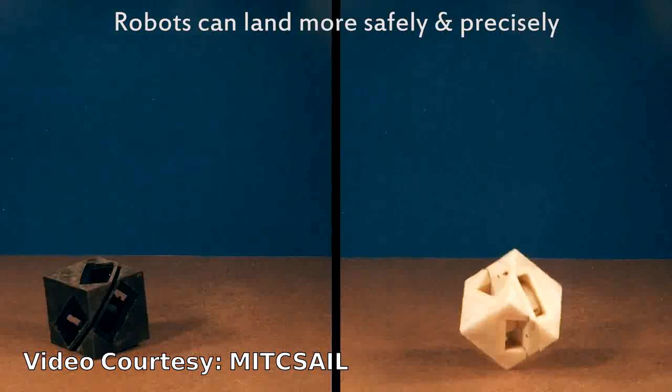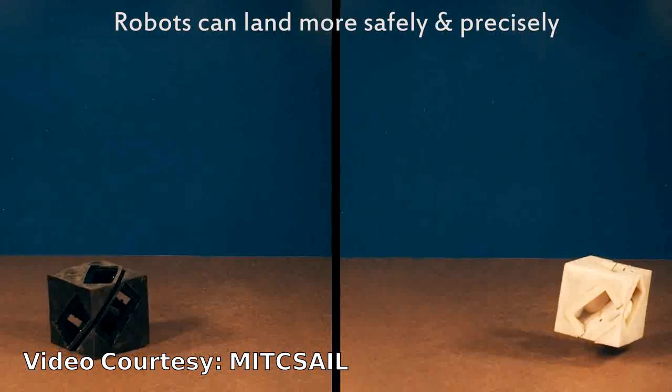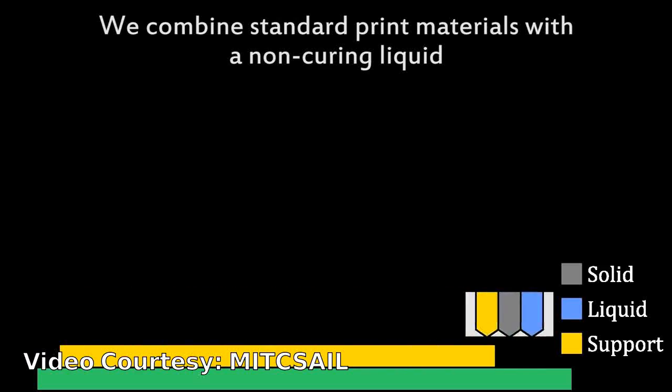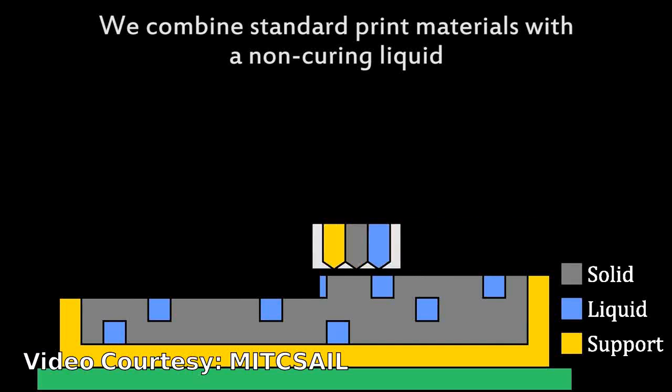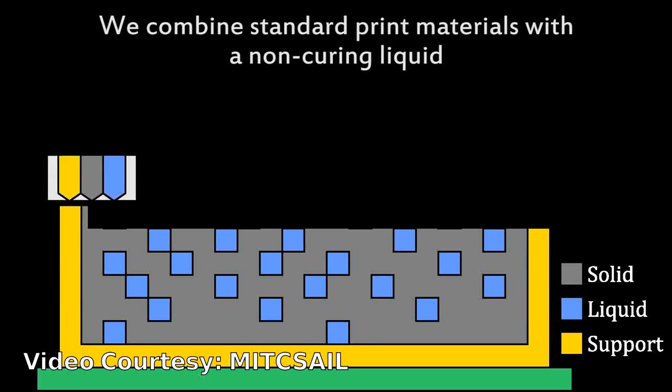The skins also allow the robot to land nearly four times more precisely, suggesting that similar shock absorbers could be used to help extend the lifespan of delivery drones, like the ones being developed by Amazon and Google.